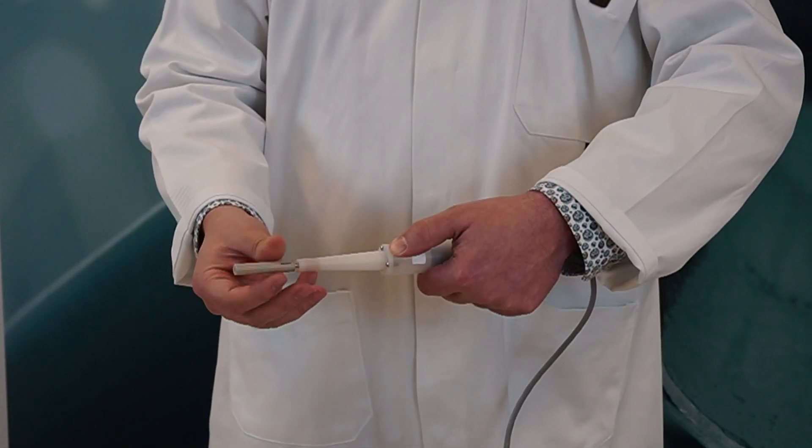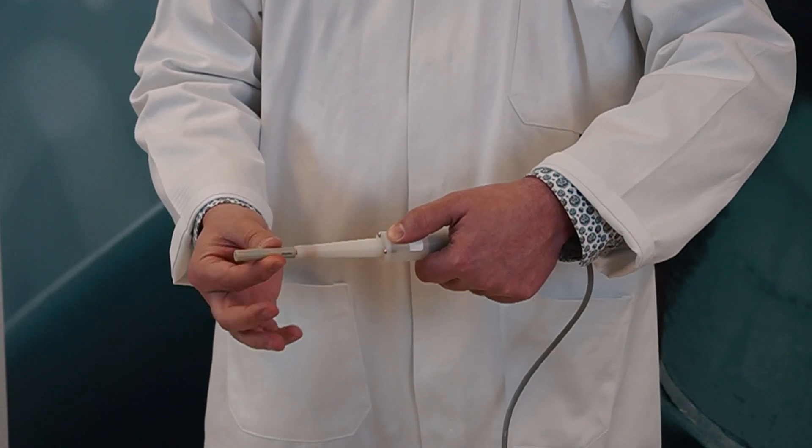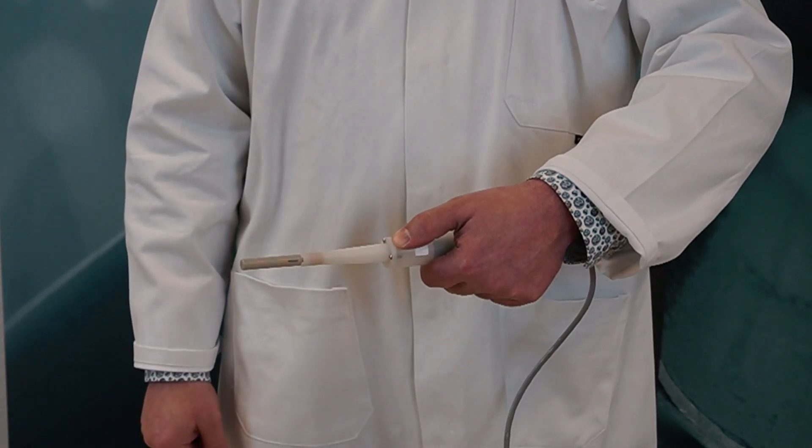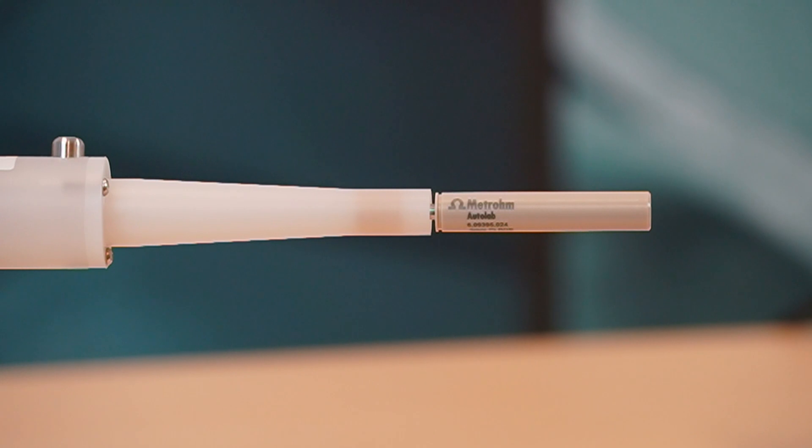The electrode tip should be finger tight and don't use any wrenches or other tools to tighten the electrode tip. There should be a small gap, shown here, between the electrode tip and the rotator. I remind you not to use any tools to tighten the electrode tip.